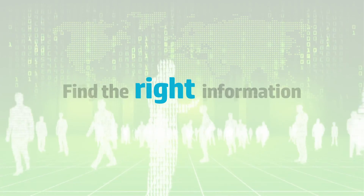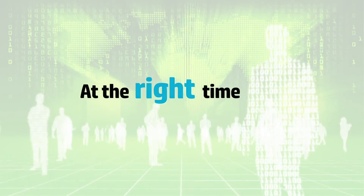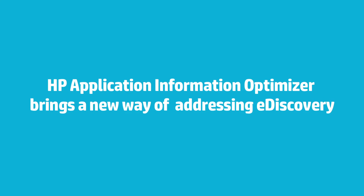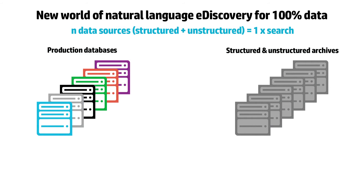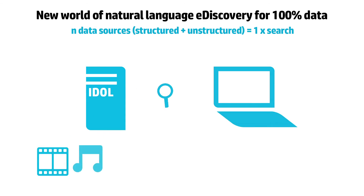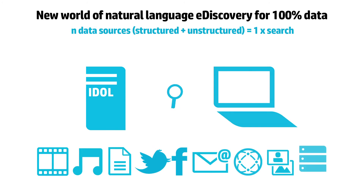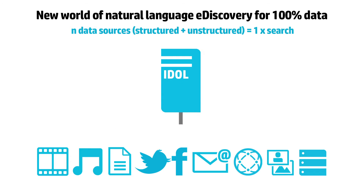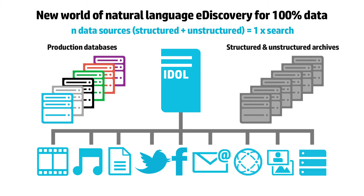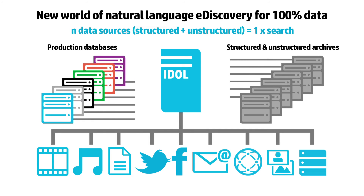Finding the right information by the right people at the right time is a key aspect of information governance. The HP Application Information Optimizer also brings a new way of addressing e-discovery challenges by eliminating the need for creating SQL queries for individual databases and performing separate searches in multiple data sources. Integration with Autonomy Idol enables users to execute one single universal search across all structured and unstructured data sources, using plain English or other natural languages without any SQL knowledge. Autonomy Idol extracts meaning from structured and unstructured data for high-performance contextual and conceptual searches across corporate databases and other data repositories.